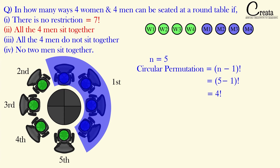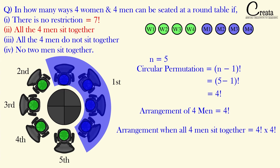So we can arrange these 5 slots in 4 factorial ways. Additionally, within the block of 4 men, we can rearrange them in 4 factorial ways — since there are 4 men in 4 slots, that gives 4 factorial. So the total answer is 4 factorial into 4 factorial. That is the answer when all 4 men sit together.